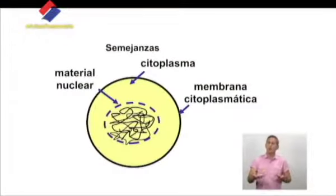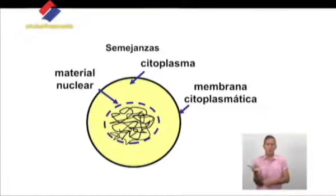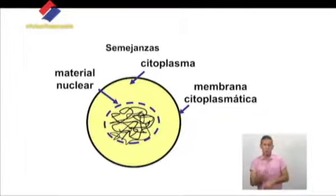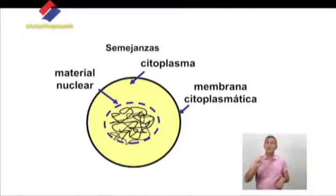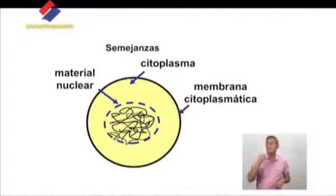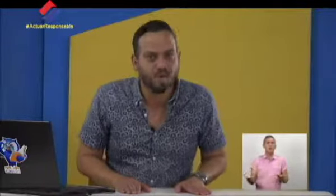¿Cuáles son las semejanzas que encontramos en estos dos tipos de células, procariotas y eucariotas? En ambas encontramos material nuclear, citoplasma y membrana citoplasmática. Estos son elementos que le dan unidad a estas dos células, a la procariota y a la eucariota. ¿Cuáles son las diferencias que encontramos entre una célula procariota y eucariota, y cuál de ellas es más compleja?